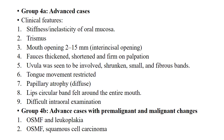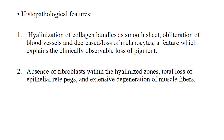Group 4 is classified into A and B. In advanced cases, clinical features include stiffness and inelasticity of oral mucosa, trismus, mouth opening of 2–15 mm, forces thickened, shortened and firm on palpation, uvula shrunken, small with fibrous bands, restricted tongue movement, papillary atrophy, circular band felt around the entire lips, and difficult intraoral examination. Group 4B represents advanced cases with premalignant and malignant changes — OSMF with leukoplakia and OSMF with squamous cell carcinoma. Histopathologically, hyalinization of collagen bundles into smooth sheets, obliteration of blood vessels, decreased melanocytes, absence of fibroblasts within hyalinized zones, total loss of epithelial rete pegs, and extensive degeneration of muscle fibers.